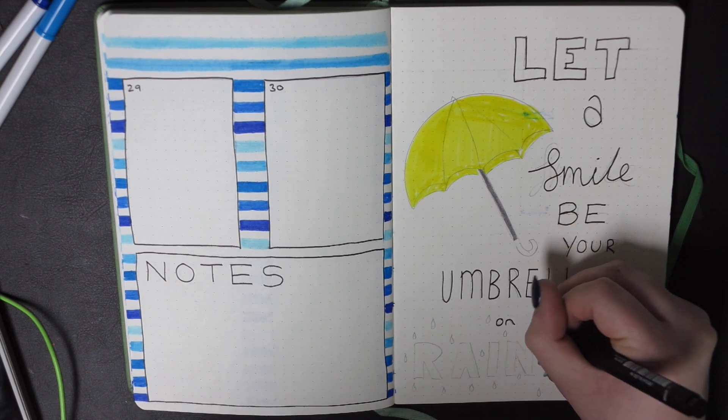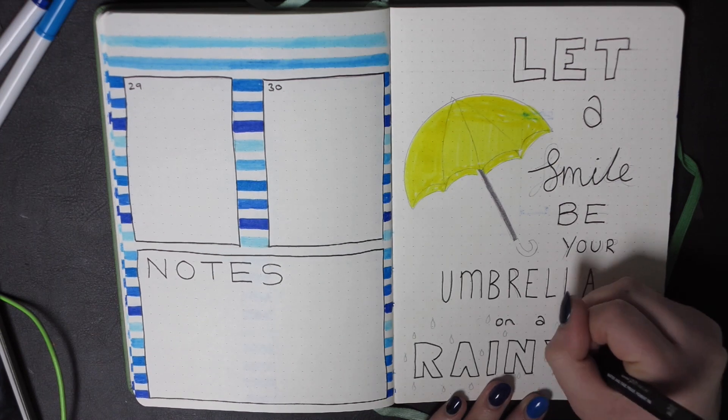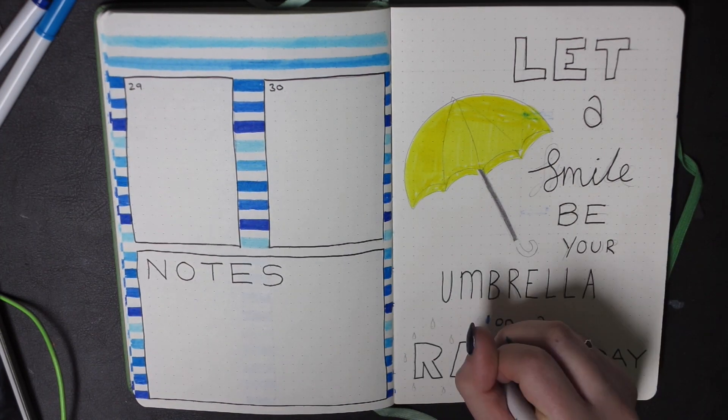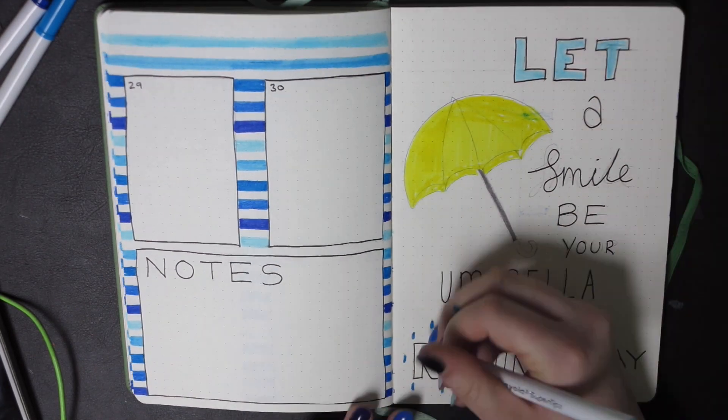I just outlined all of the lettering in my 0.5 unipin pen and then coloured in the rainy and the let part of this quote, and then outlined the umbrella. And that takes us to the end of my April bullet journal.